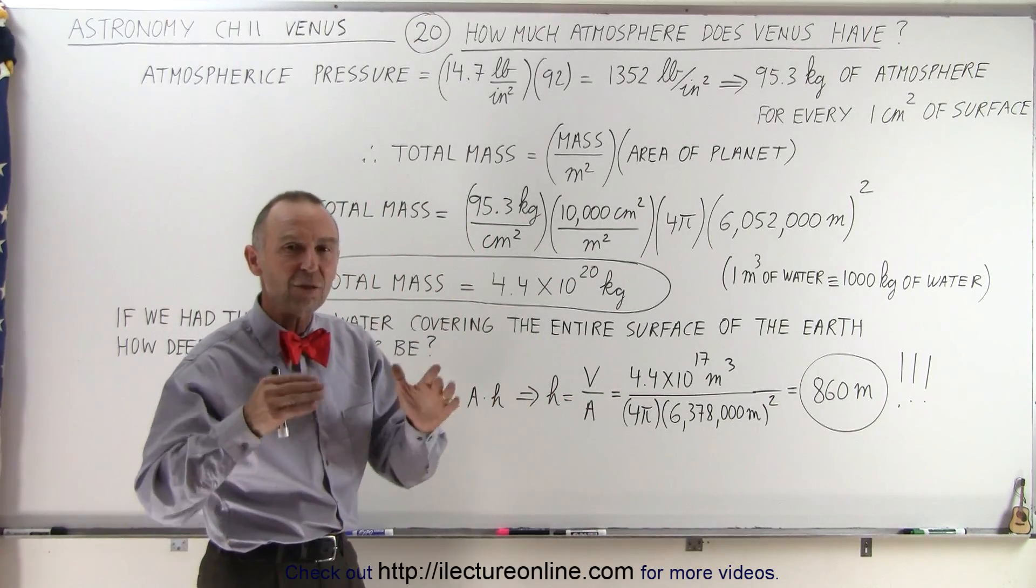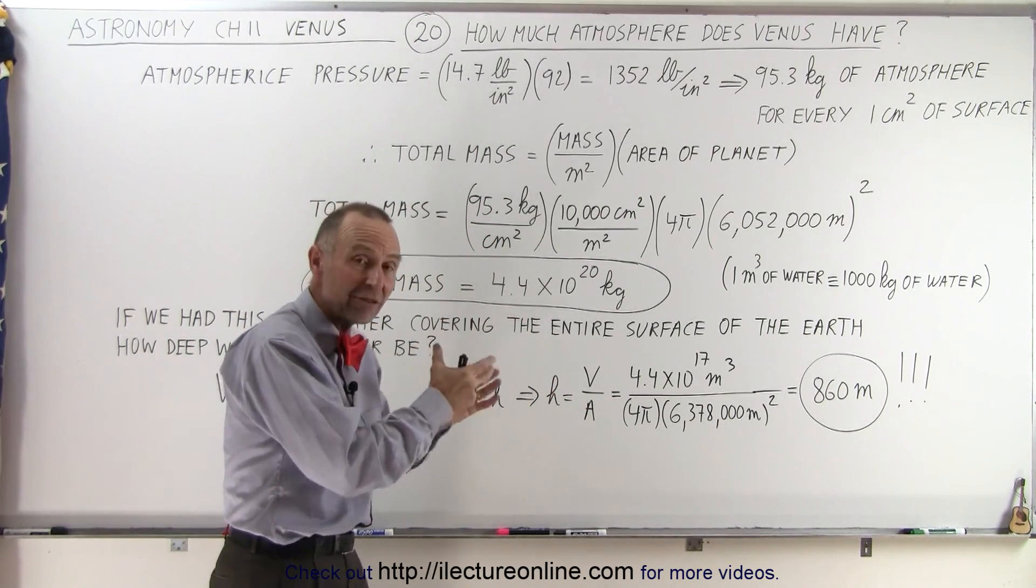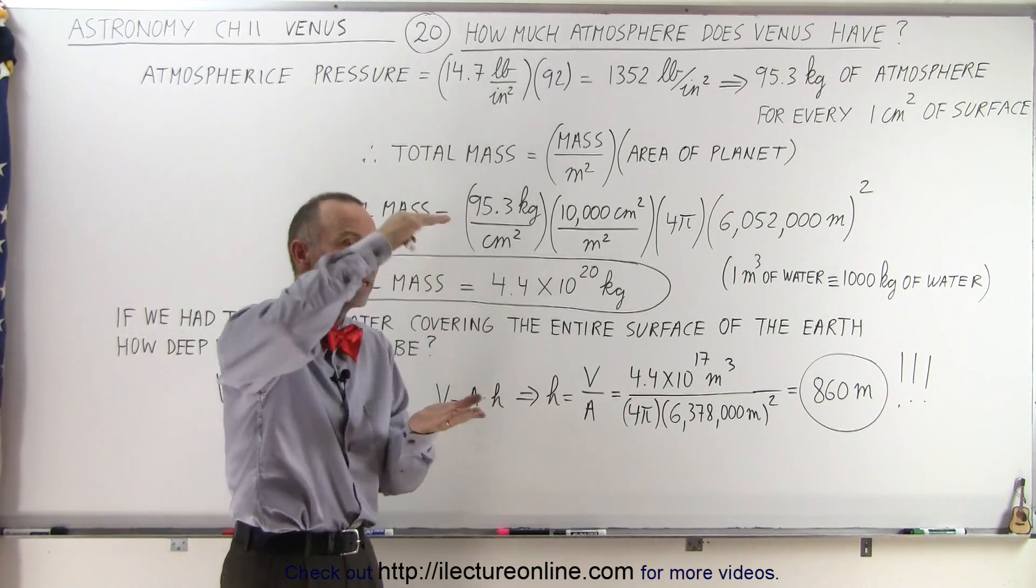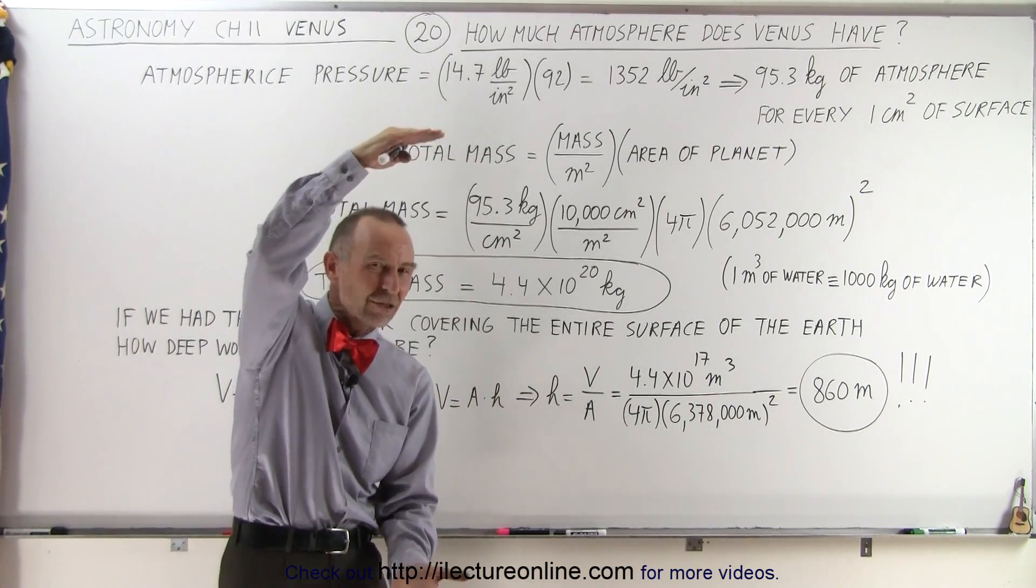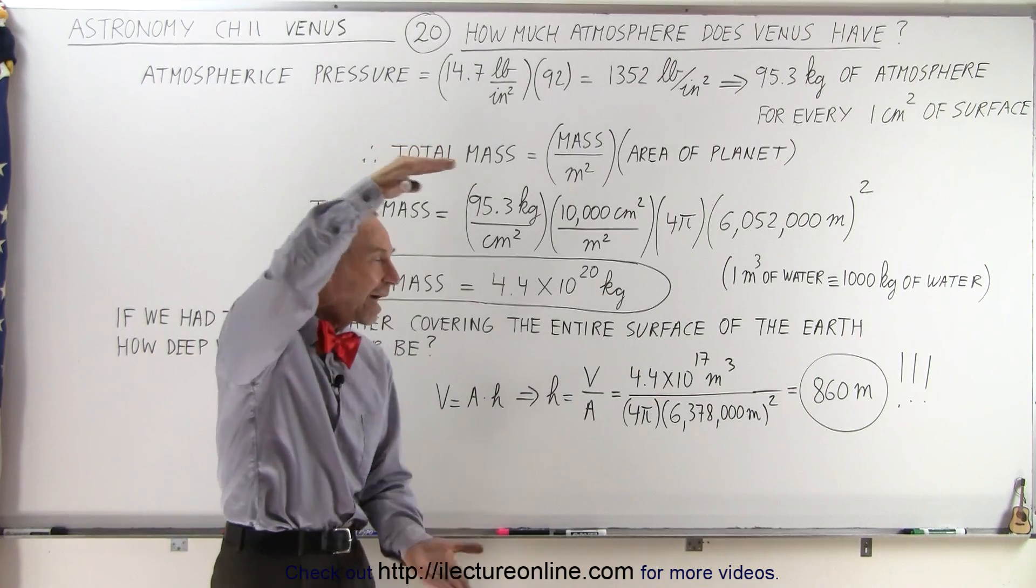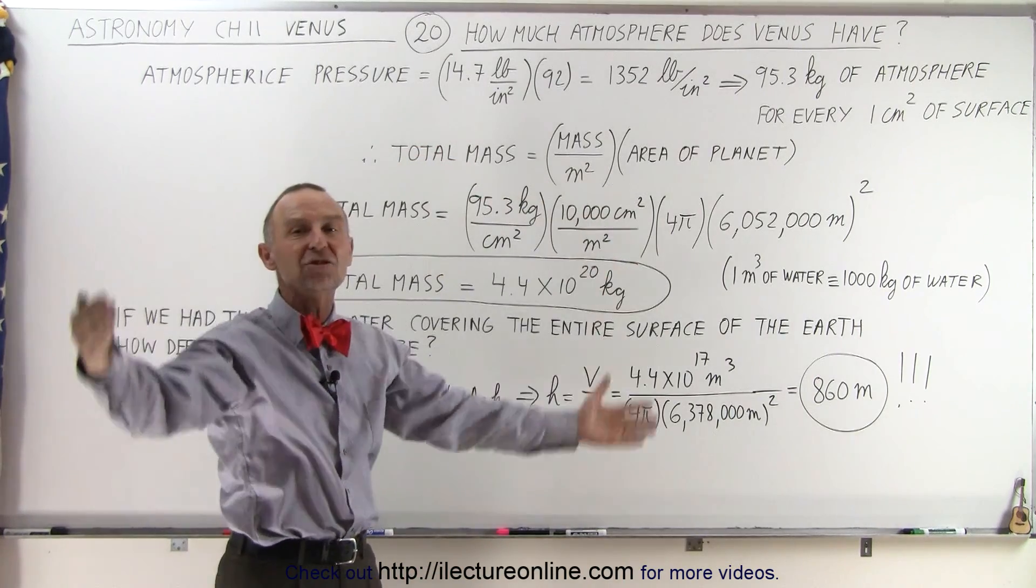If we had the same mass of water as we have mass of atmosphere in Venus, that would be equivalent to a layer of water 860 meters thick—that's almost 3,000 feet thick—covering the entire Earth.